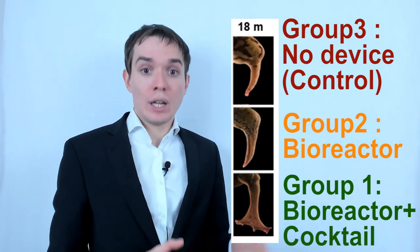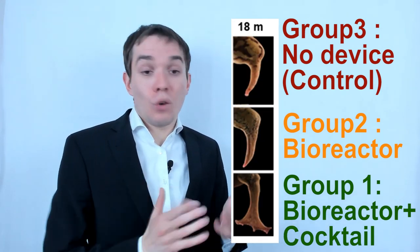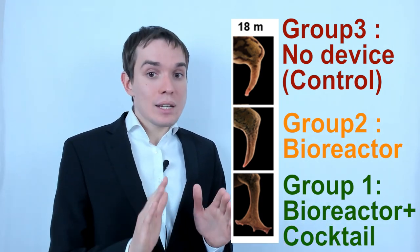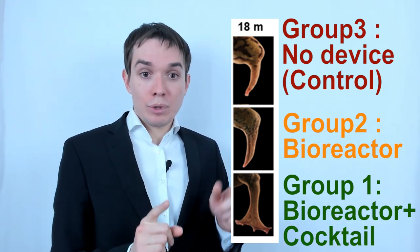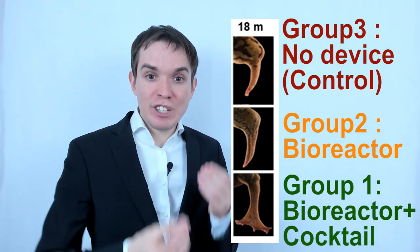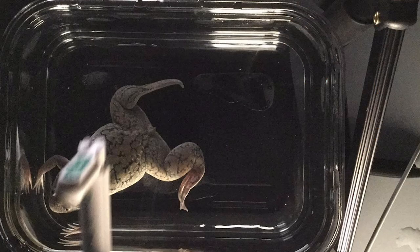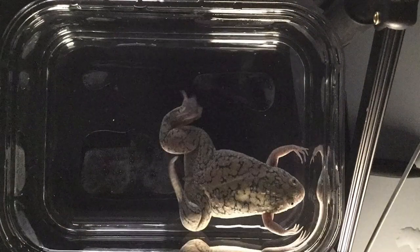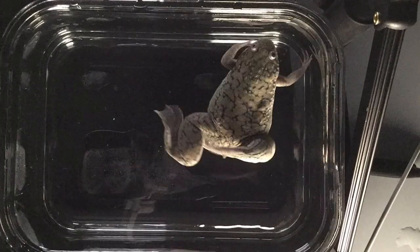As the scientists expected, regeneration occurred only in the first group. And in animals from the other two, the place of the lost limb was overgrown with unstructured tissue. Remarkably, 18 months after the amputation, animals from the first group grew nearly full-fledged new paws with finger-like structures at the end. As you can see in the published video, the frogs successfully used these limbs for actions, such as swimming.